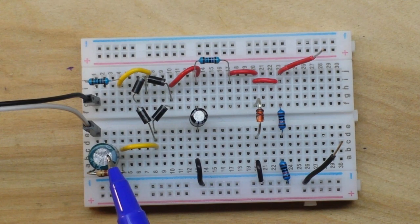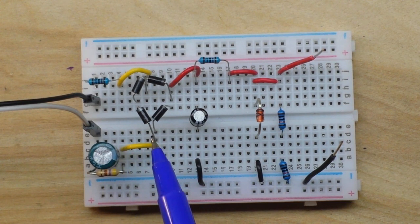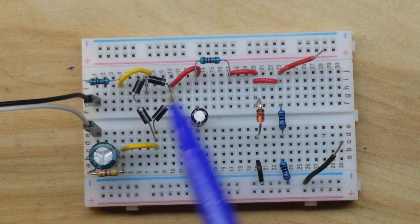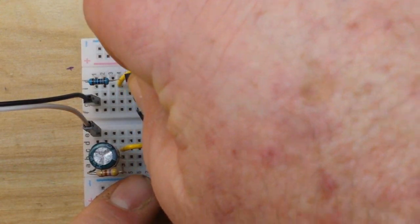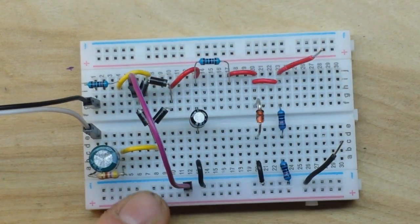There's our 8.3 microfarad 200 volt capacitor with the discharge resistor across it feeding the other side. And somebody forgot to put the ground wire in there. There we go.